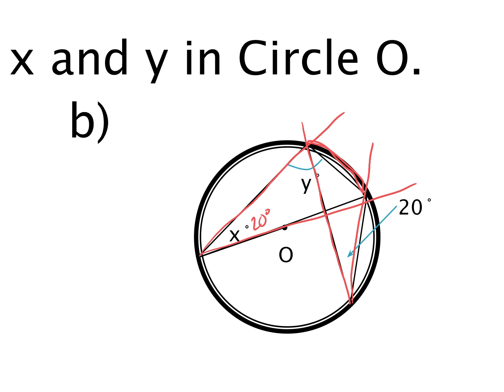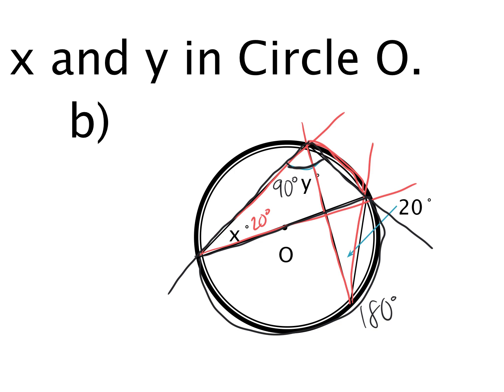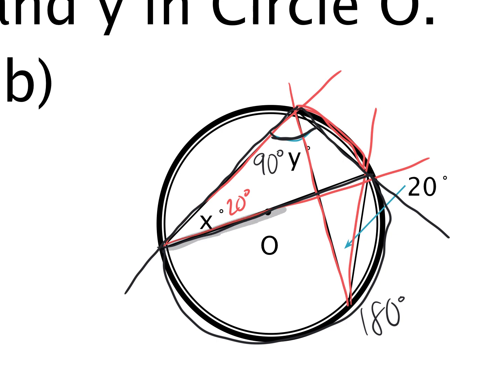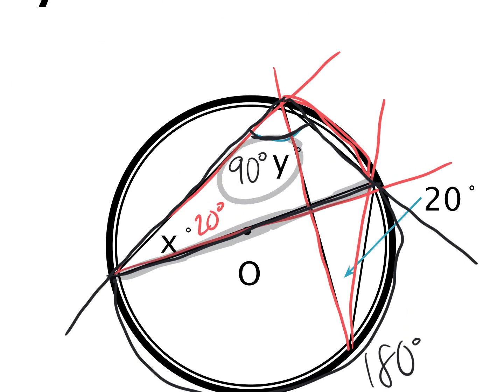What about Y? Y is pointing to the entire angle. Think about the arc it creates — it's 90 degrees because the angle, when extended, creates the diameter, which makes a semicircle of 180 degrees. Half of 180 is 90. Anytime they give you a diameter, use that to your advantage — the diameter always creates two 180-degree arcs. So Y was 90 and X was 20.